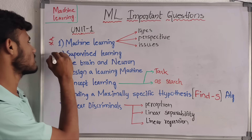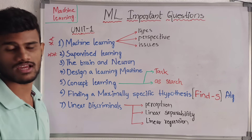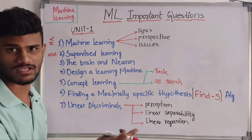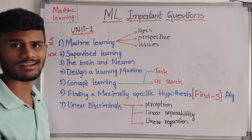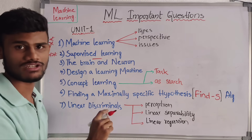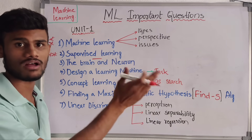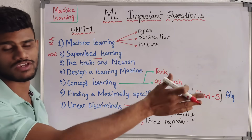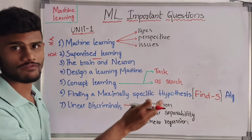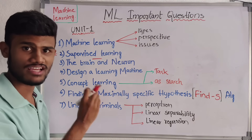Next, coming to Supervised Learning — this is also an important question because it is a type of Machine Learning. In Machine Learning, we have three types: Supervised, Unsupervised, and Reinforcement Learning. In the first unit we have Supervised, in the third unit we have Unsupervised, and in the fifth unit we have Reinforcement Learning. These are the three types of Machine Learning, each covered as an individual topic in each unit.